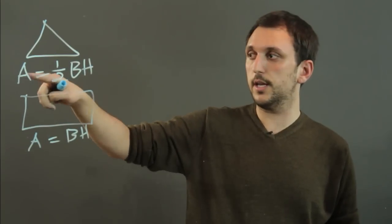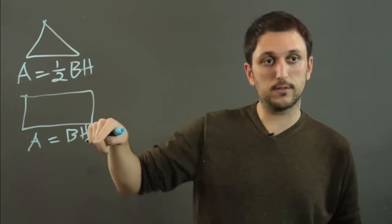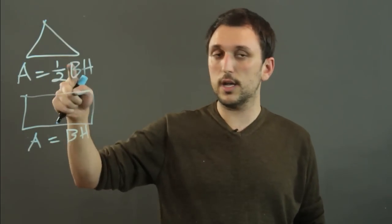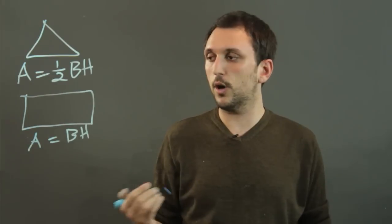So this is one-half base times height, and this is just base times height. And the reason is every triangle is essentially one-half of a quadrilateral.